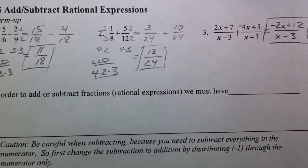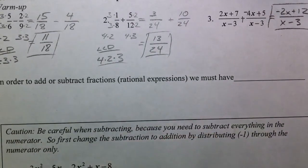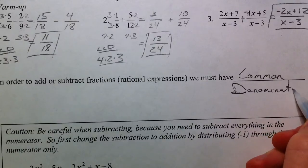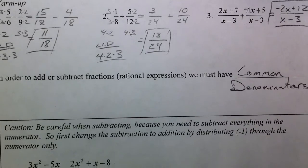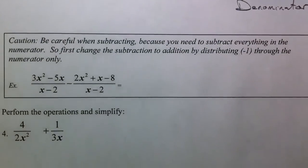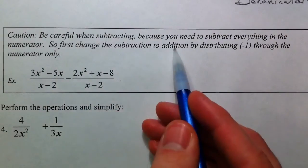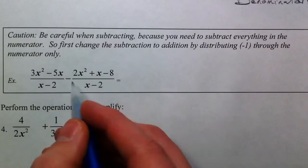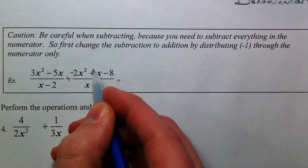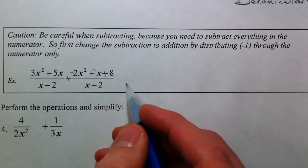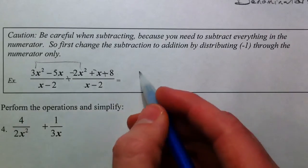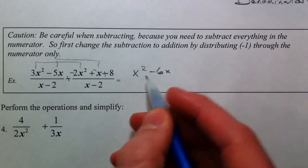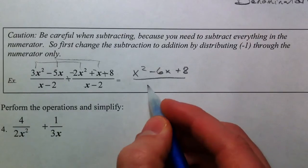To add or subtract rational expressions, we must have common denominators — that is the most important and often trickiest part. When subtracting, this minus sign makes all terms in the second numerator negative. You can distribute the minus sign, then combine like terms: 3x squared minus 2x squared is x squared, negative 5x and negative x make negative 6x, and then we have positive 8 on the end, all over x minus 2.